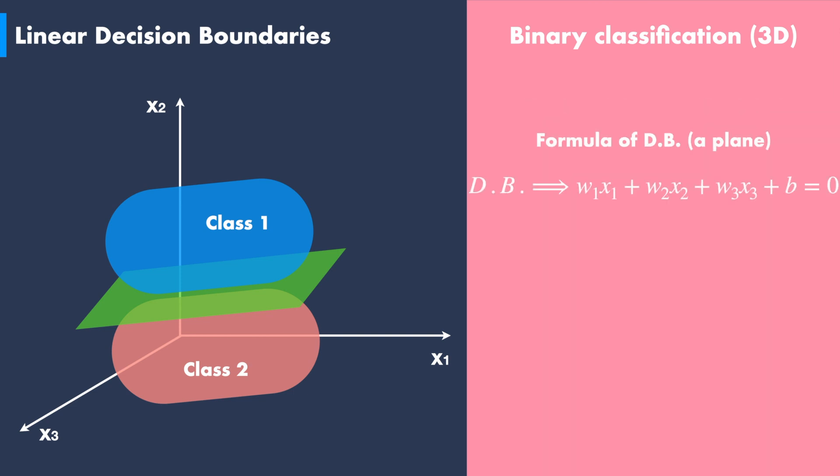In the case of a 3D binary classification problem, we need to consider the equation of a 2D plane: w1x1 plus w2x2 plus w3x3 plus b equals zero. In this case, the y hat formula is obtained by applying the step function to the linear equation of the 2D plane.